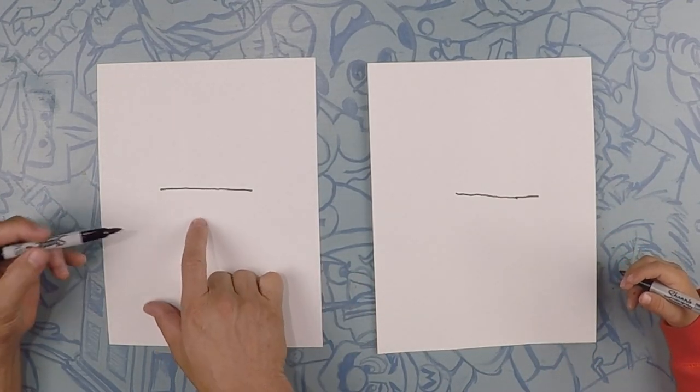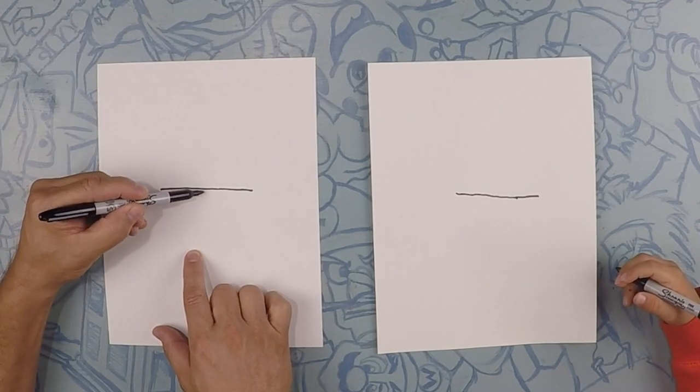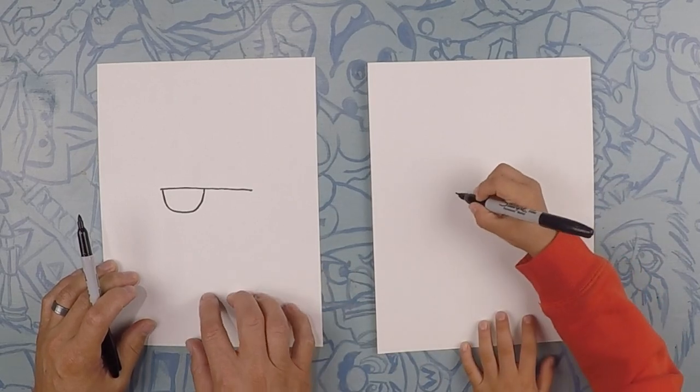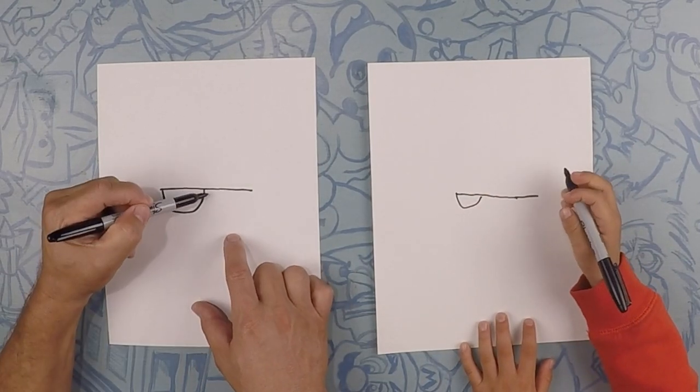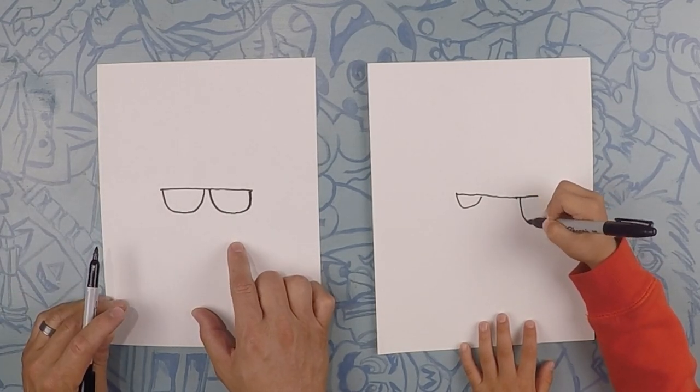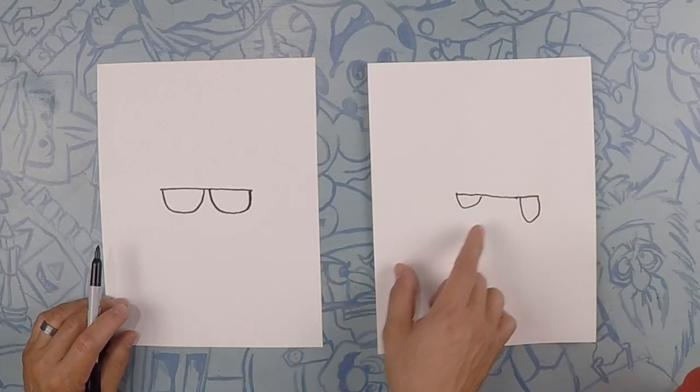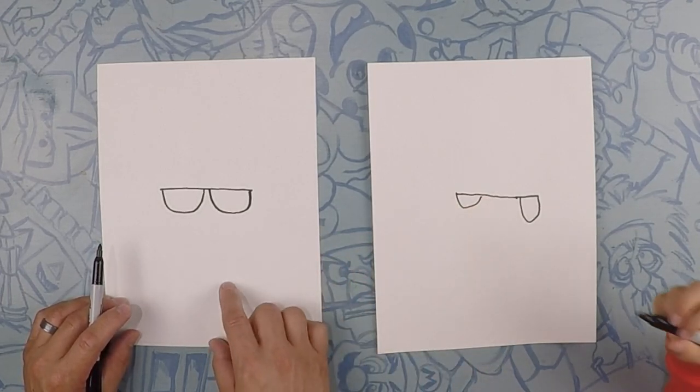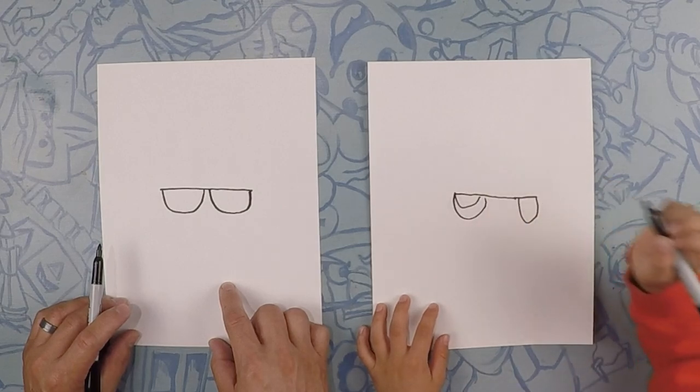So underneath this we're gonna do a big U like this, just like that. That's his eyes right? Yep that's gonna be one eye and then let's do another one right next to it. Whoa Frankenstein! So you gotta make one a little bit bigger on the outside. Can you do that? Awesome.